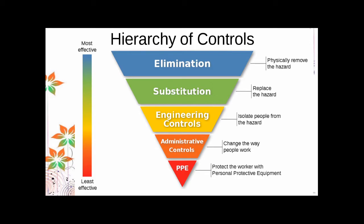Next is substitution: replace the hazard with a similar virus that is not infectious to you. It's hard to find a substitute, but the substitute must contain similar characteristics as the actual hazard while having a lower impact on yourself. Then there are engineering controls, administrative controls, and PPE — these are the ones we usually use in laboratories, and their effectivity ranges from medium to low.